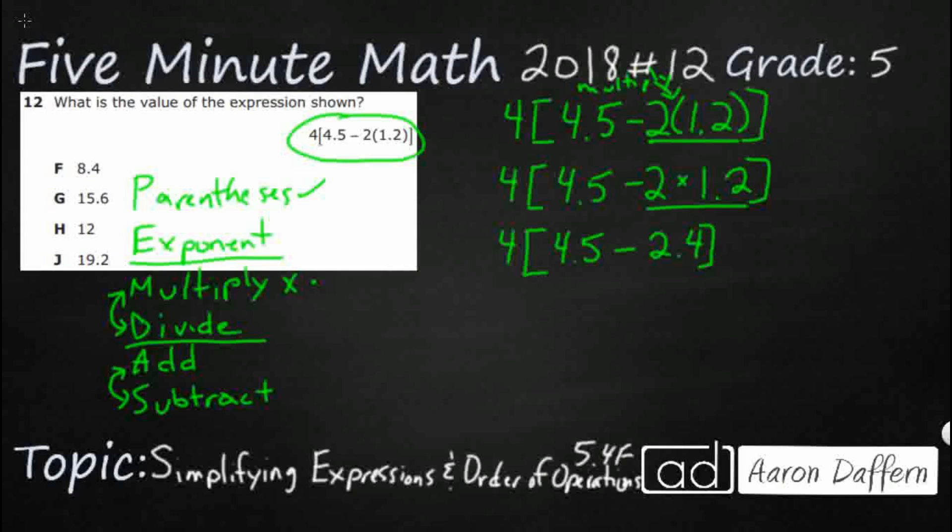Now all we have left inside of our bracket, which is just like a parentheses, is a subtraction, so we're going to go ahead and take care of this 4.5 minus 2.4, and then it's going to be 2.1.